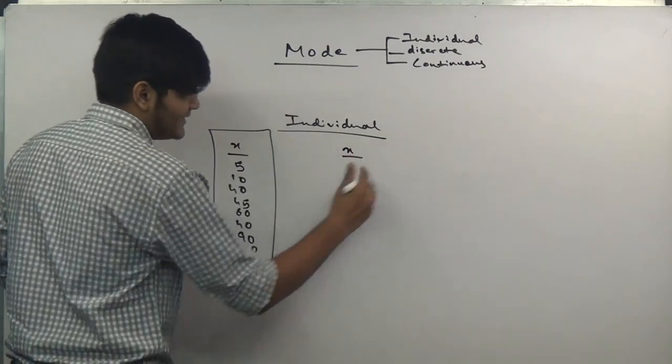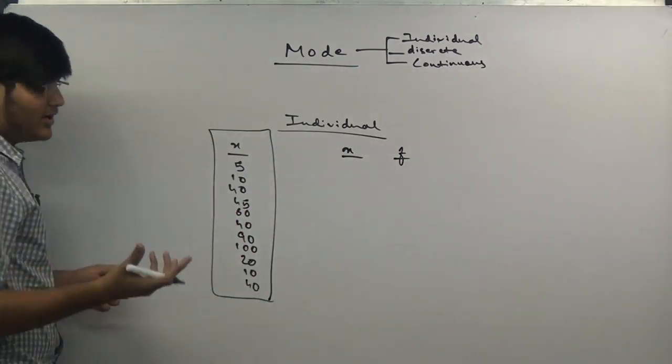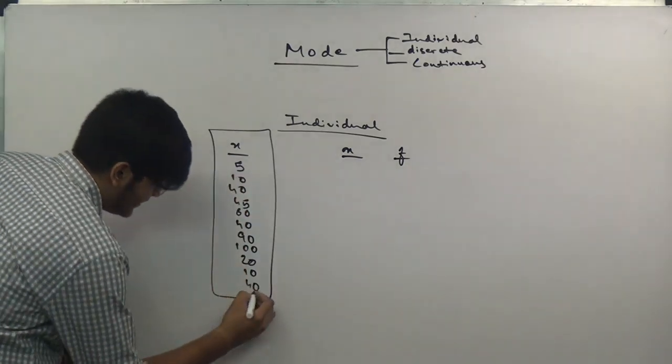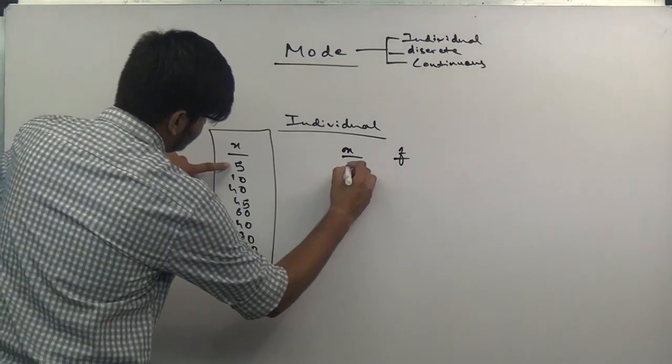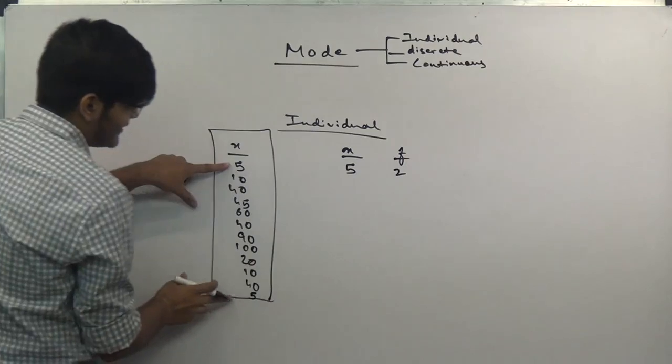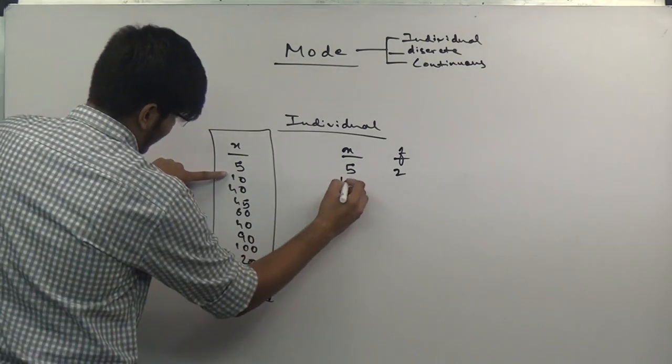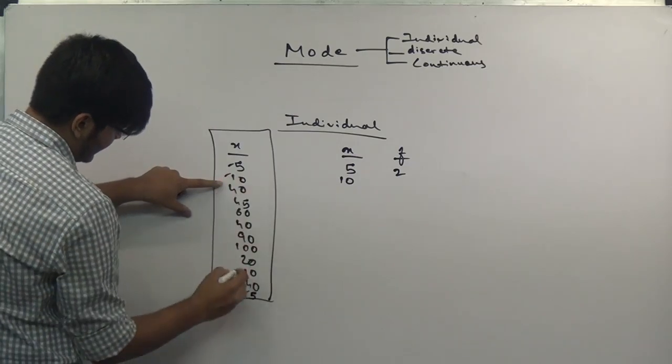We have to declare the frequencies or the number of times a particular number is repeated. For convenience I will add one more 5. Now 5 is appearing 2 times, so the frequency of 5 is 2. 10 is appearing twice.